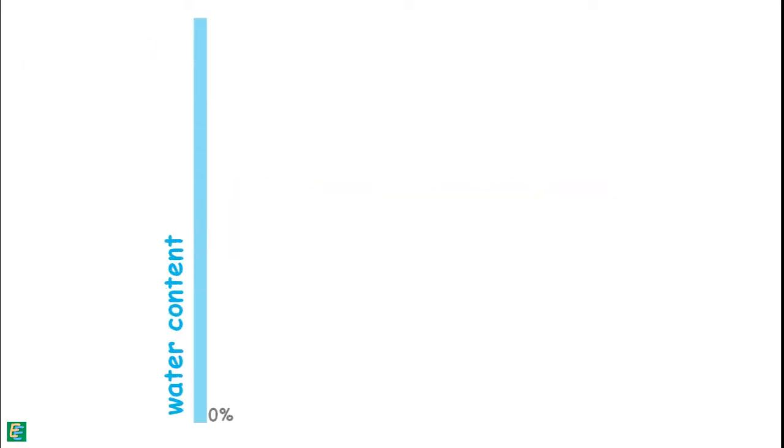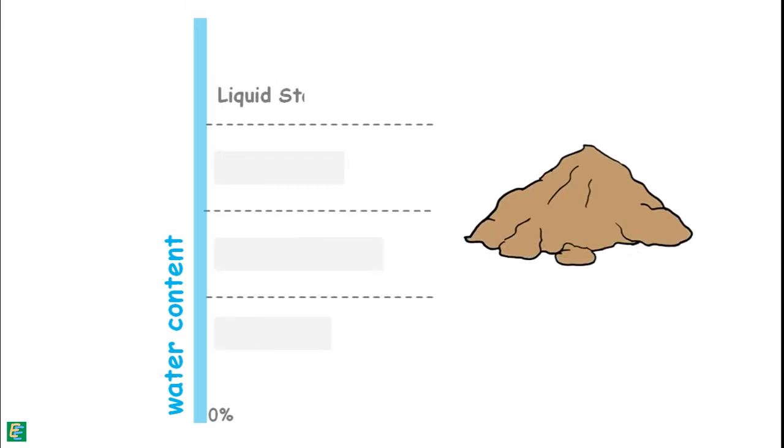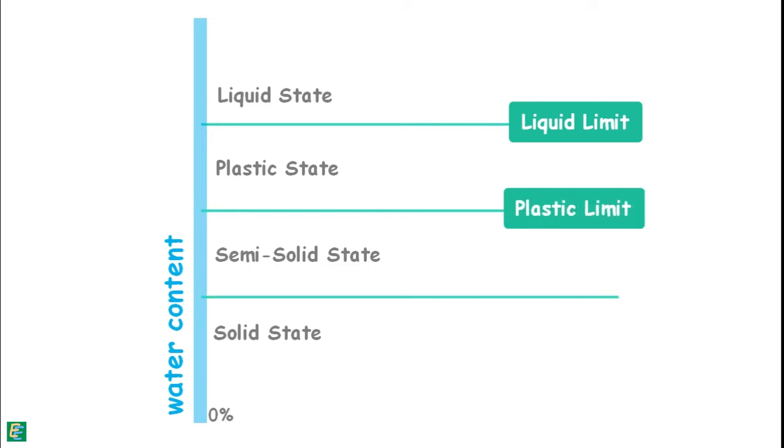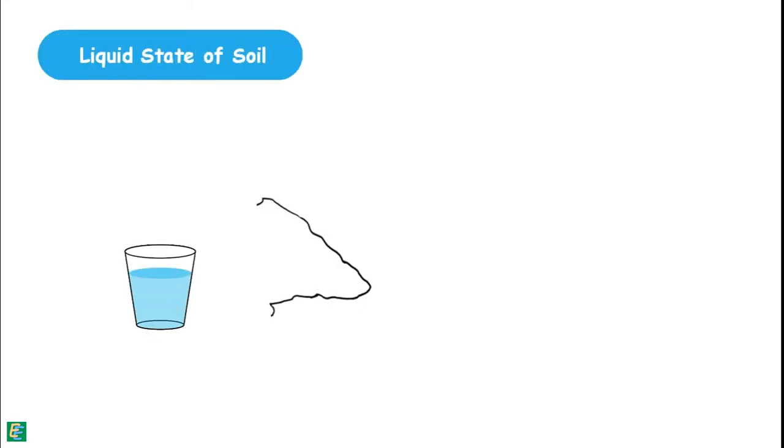Depending upon the water content, soil may appear in one of these four states: liquid state, plastic state, semi-solid state, and solid state. Water content at which the soil changes from one state to another are called consistency limits. These limits are liquid limit, plastic limit, and shrinkage limit.